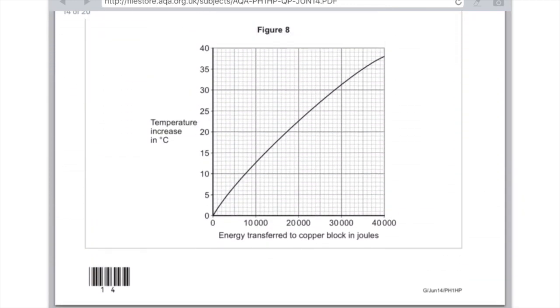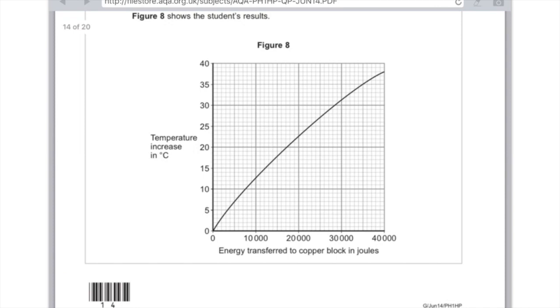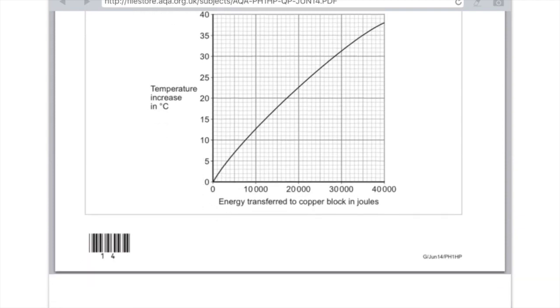Use figure eight to determine how much energy was needed to increase the temperature of the copper block by 35 degrees. Look across on the y-axis at 35 degrees and read off that value. You'll see on the x-axis that's 35,000 joules.